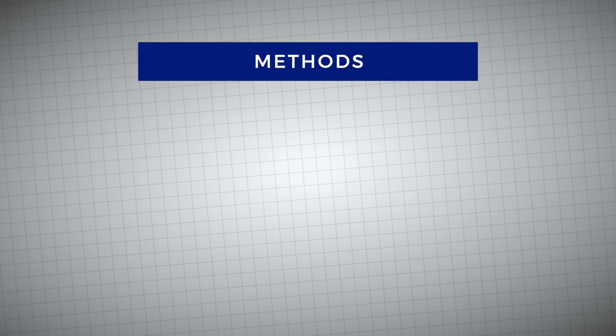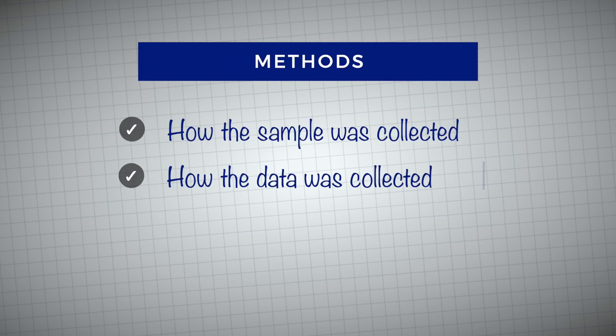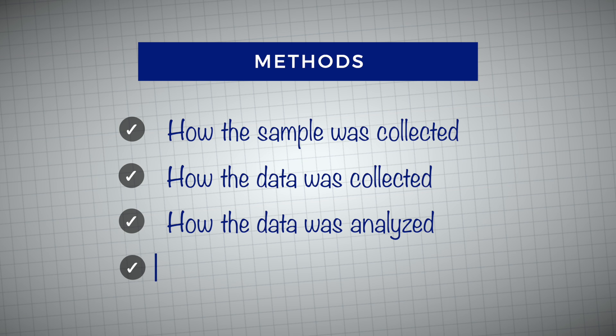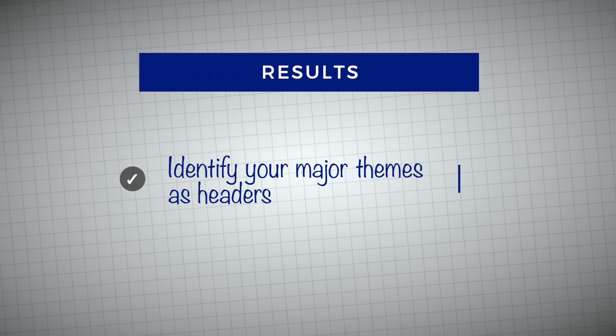Then jump into the methods section: write down how your sample was collected, how your data was collected, how your data was analyzed, and any data visualizations or things specific for publication. For the results section, identify your main themes and headers, which are typically going to be the main questions or themes from your figures and tables that you've already made beforehand.